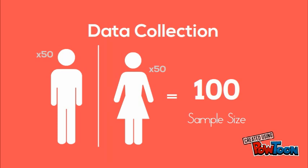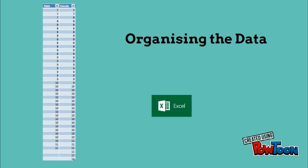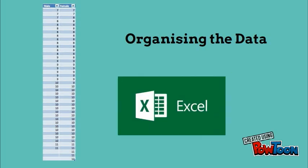I chose this sample size because it provided a large enough sample but isn't too large that it will be too difficult to manage. To organise the data, I placed all the data into a table — one column with the female data and one with the male. I then sorted it into ascending order using a feature on Excel.